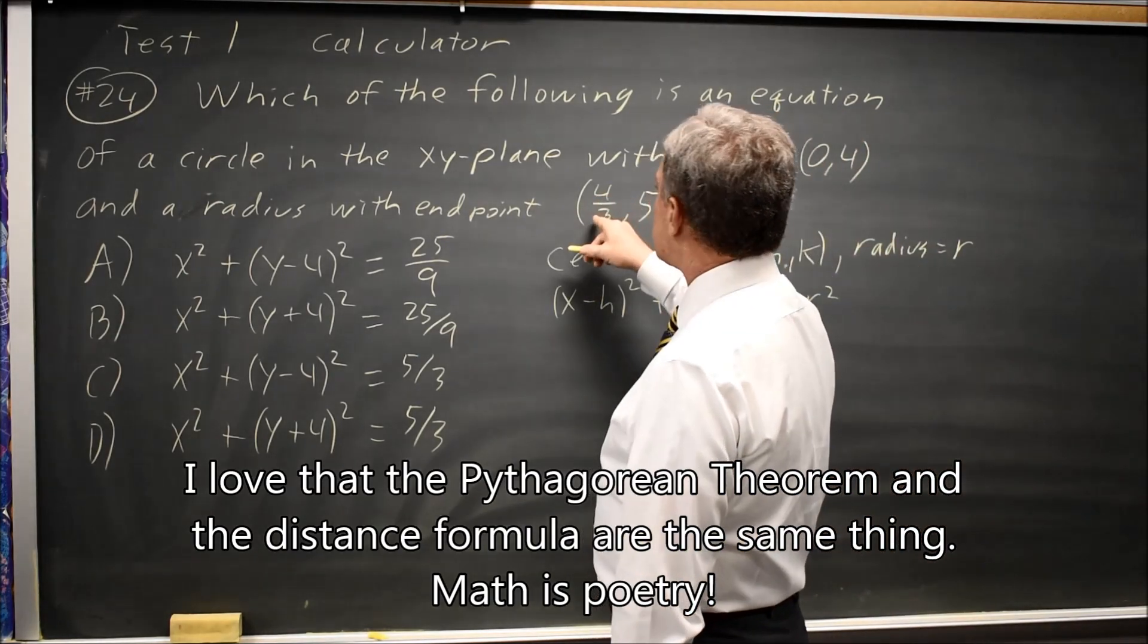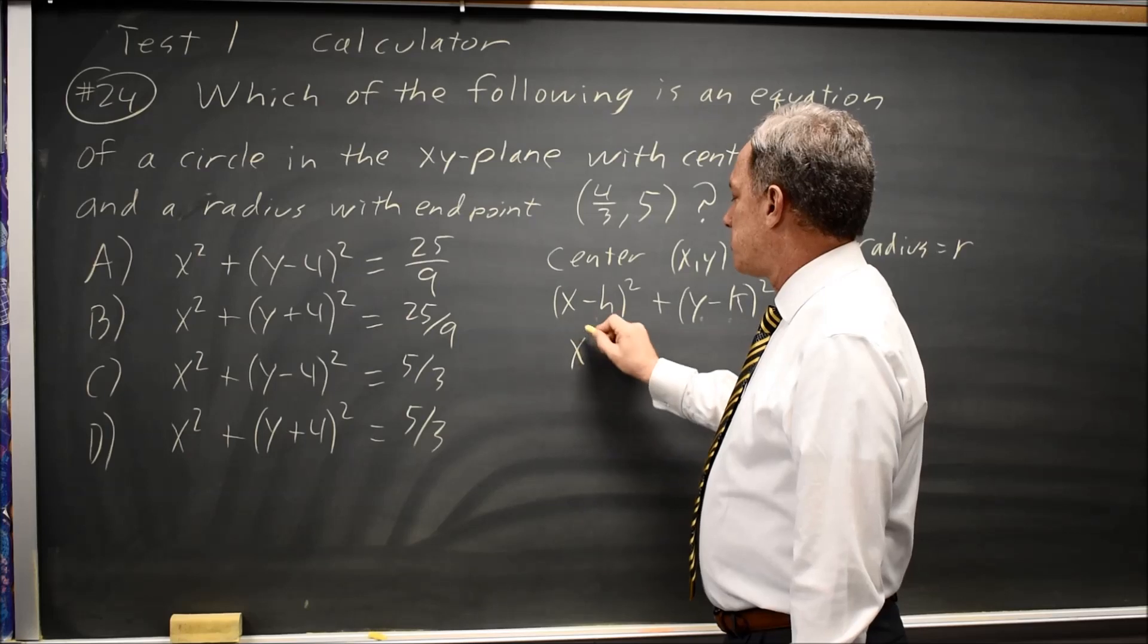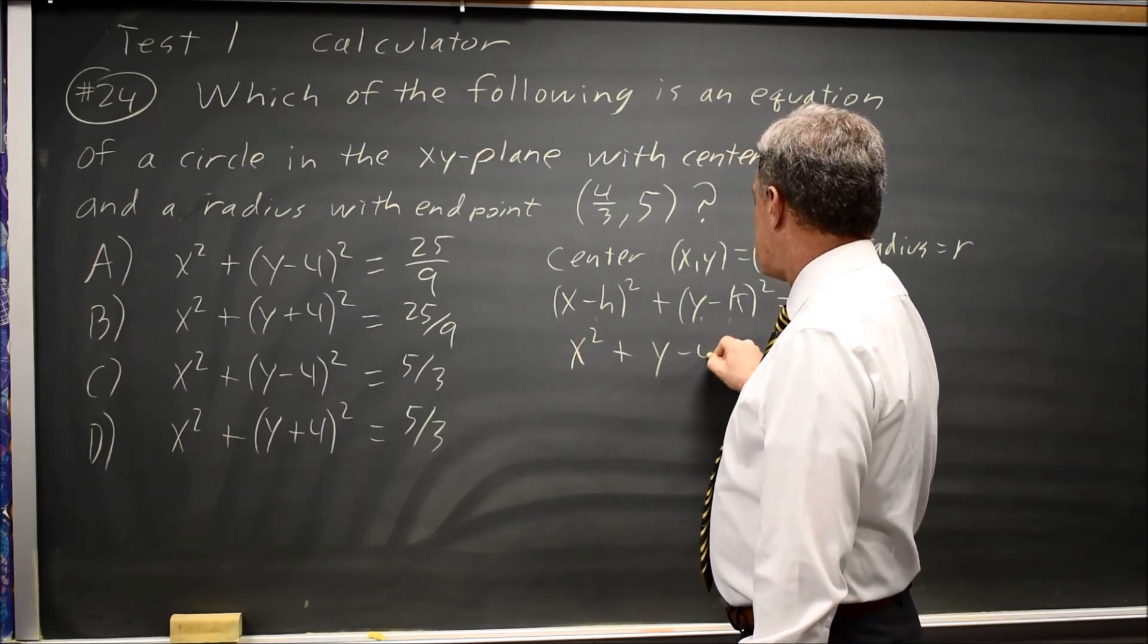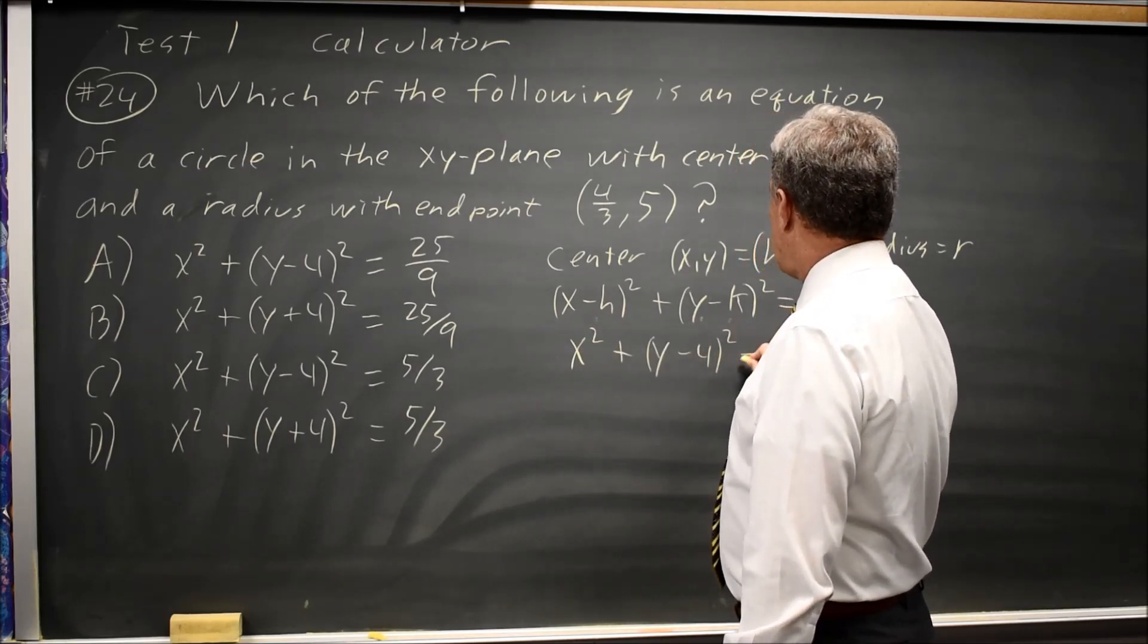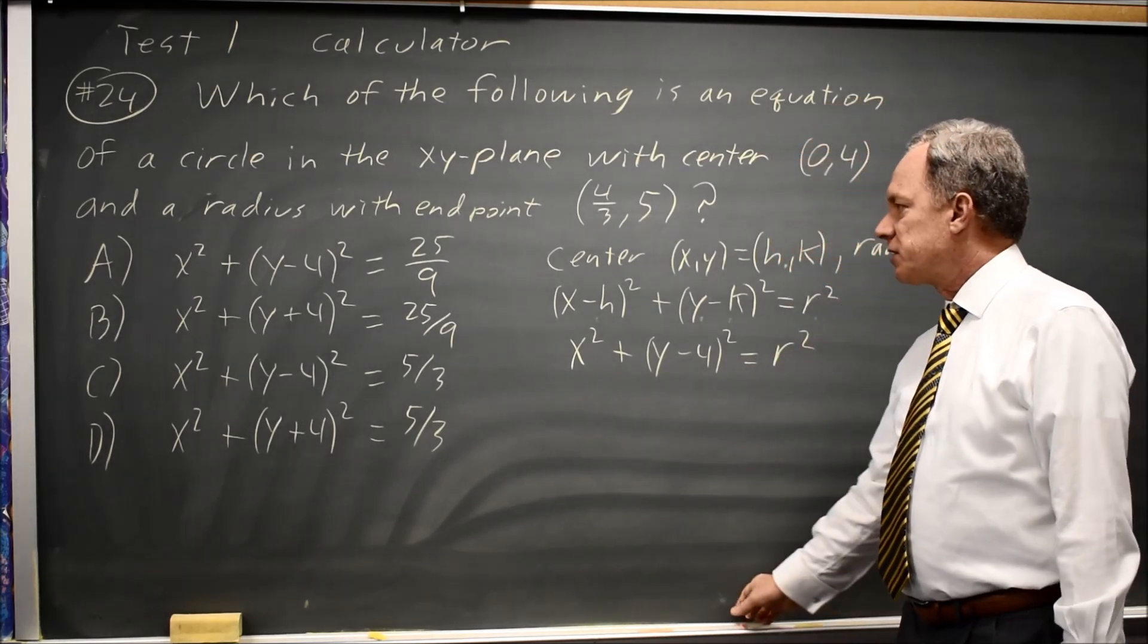In this case, with the center at (0,4), this would be x minus 0 squared is just x squared, y minus 4 squared equals r squared. And we need to find r to identify the correct answer.